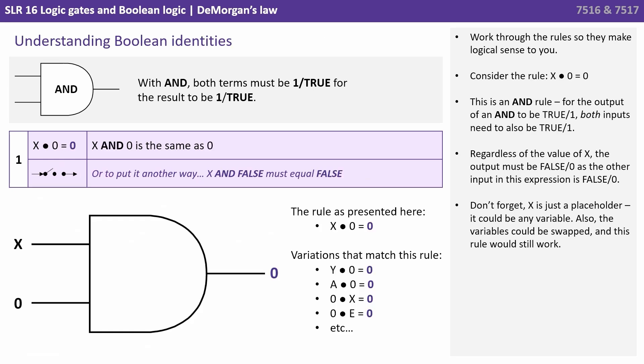Now, make sure you can work through those basic rules so they do actually make logical sense to you. Again, consider the rule X and zero equals zero. This is an AND rule. For the output of an AND to be true, both inputs need to be true. So regardless of the value of X, the output must be false or zero as the other input in this expression is false or zero. And that is why we can say X and zero is zero. Now don't forget, X is just a placeholder, it could be any variable. And also the variables could be swapped and this rule would still work.